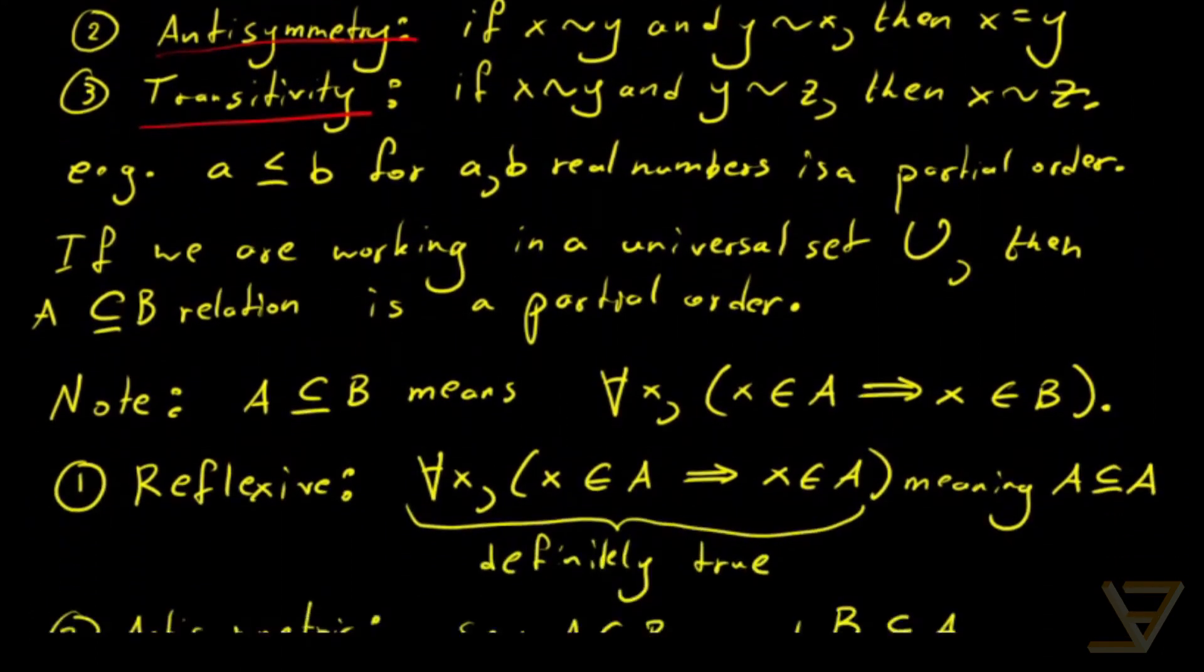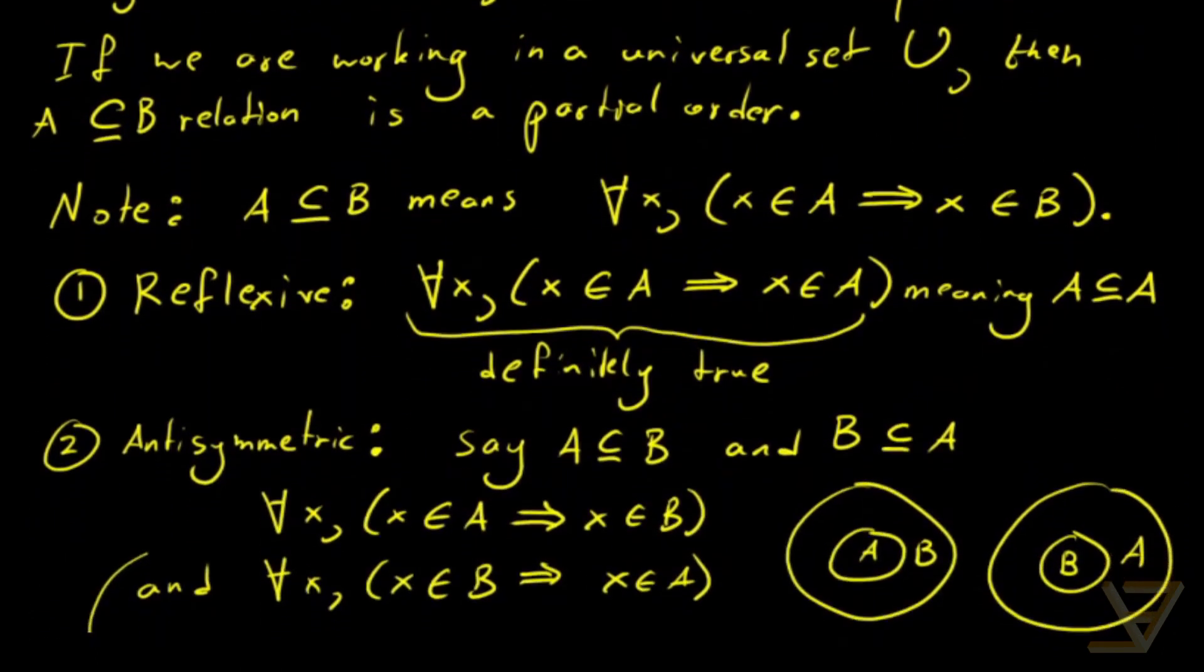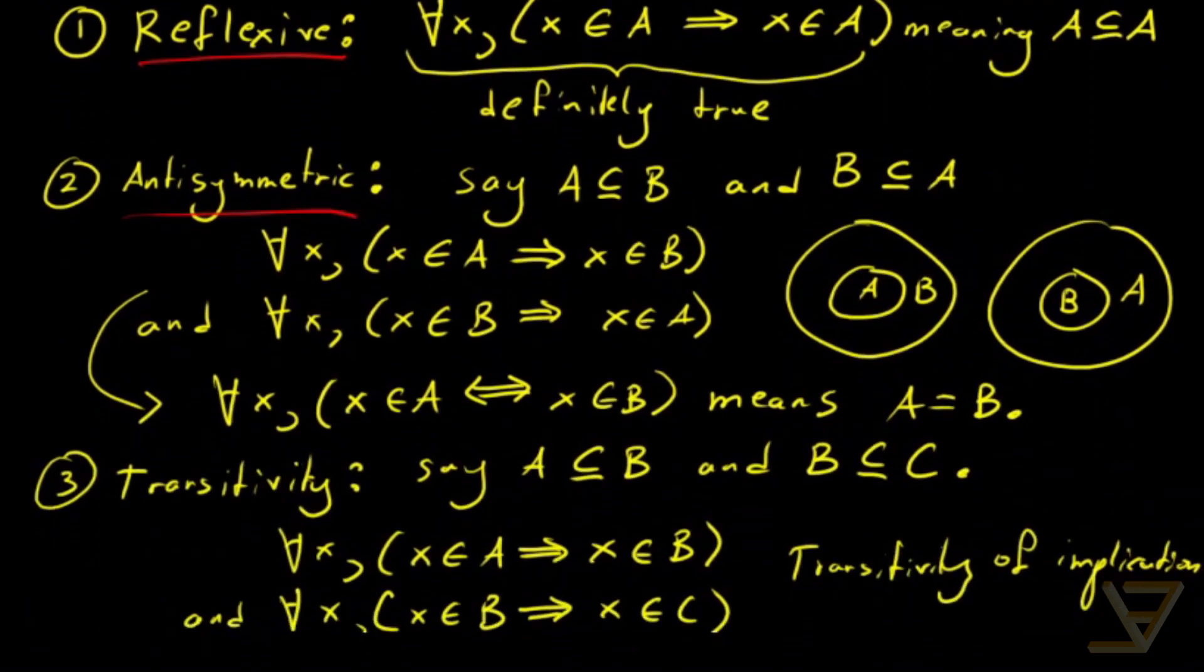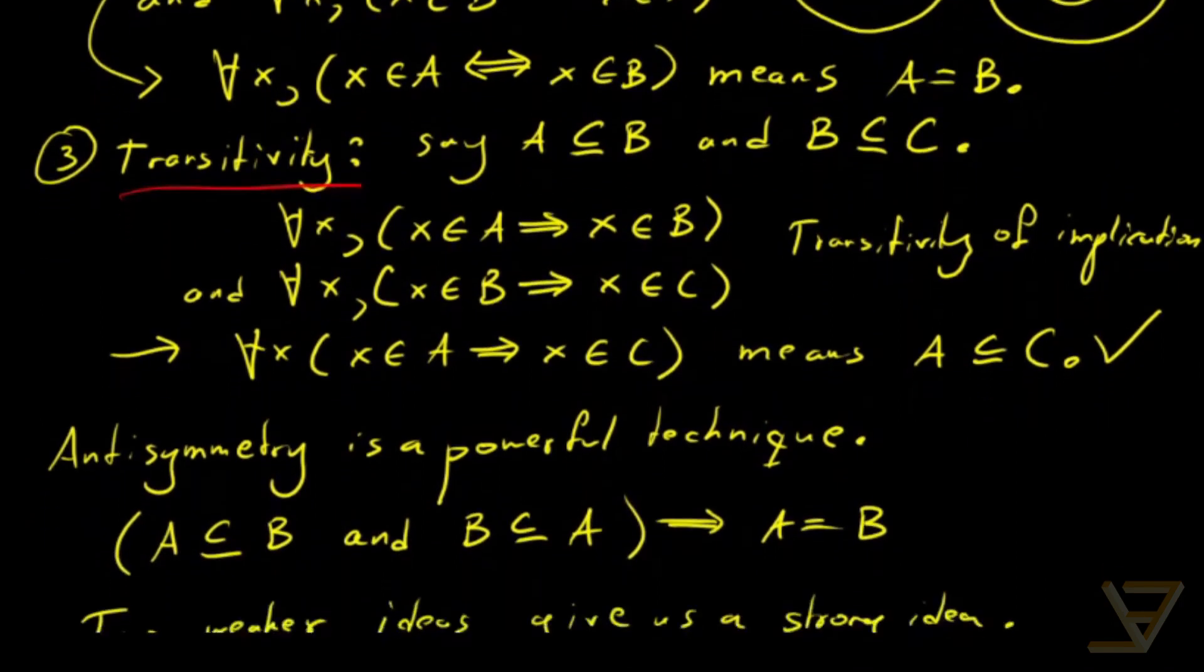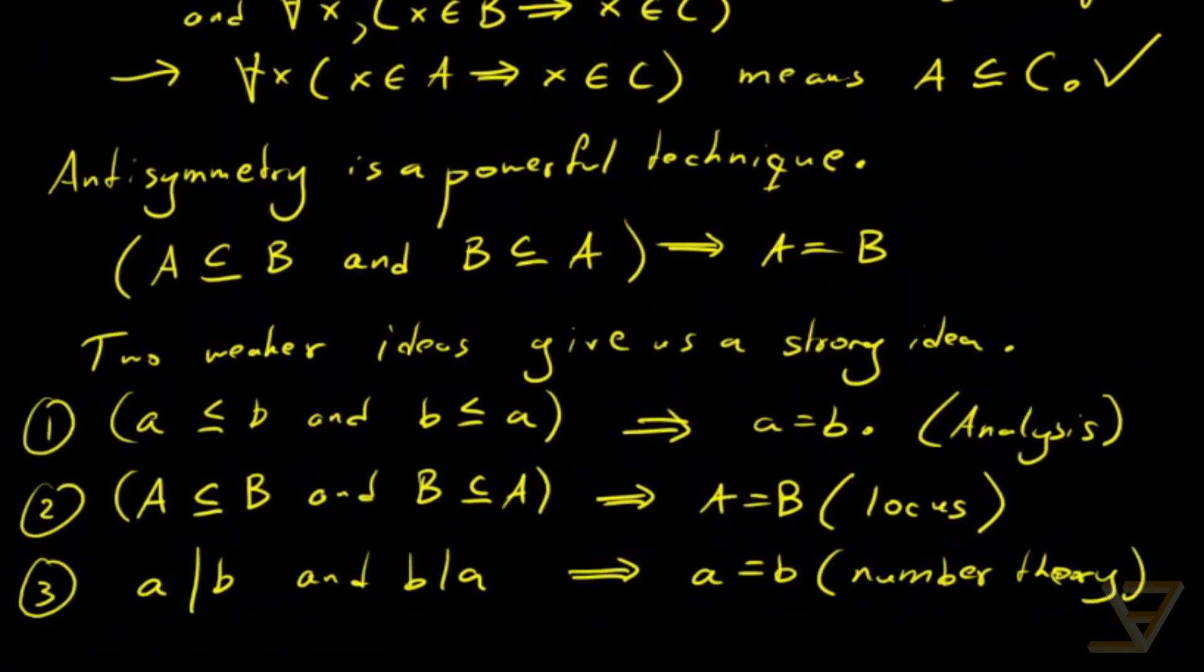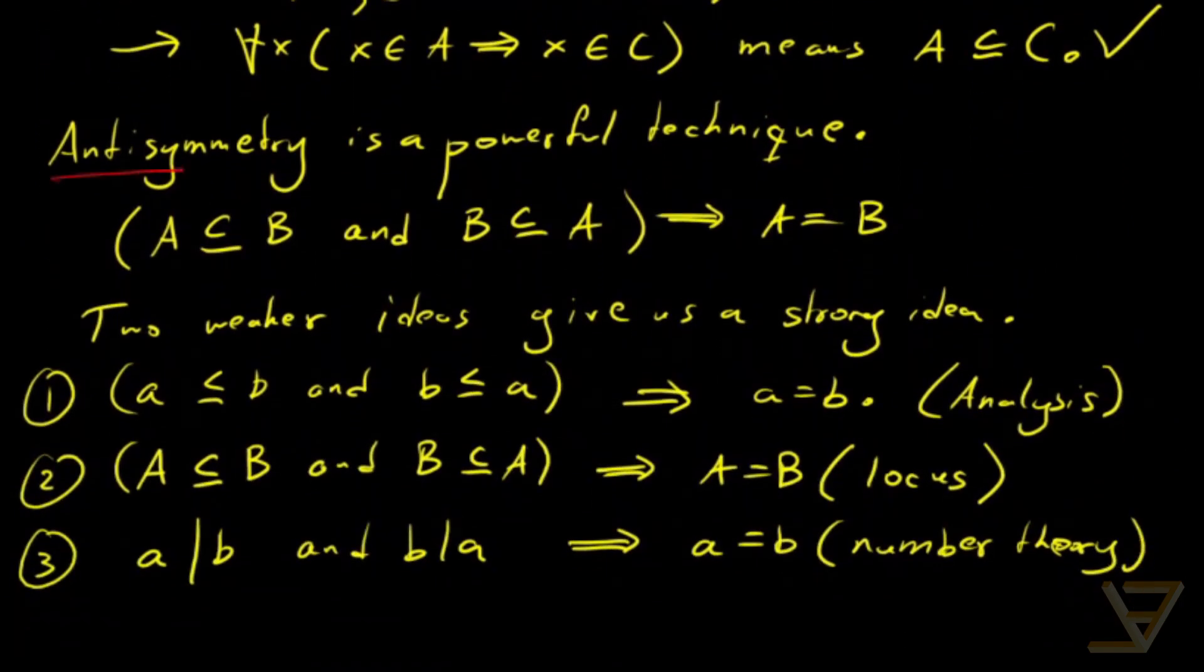Then we proved that the subset relation is reflexive, antisymmetric, and transitive. And finally, I mentioned examples of antisymmetry, which include inequalities, the subset relation, and divisibility, to encapsulate why this is such a powerful technique.